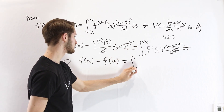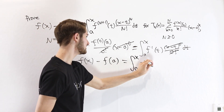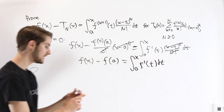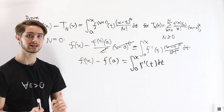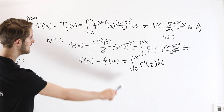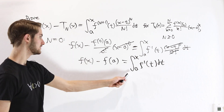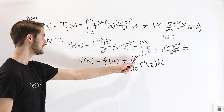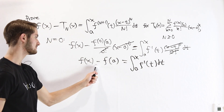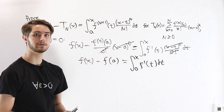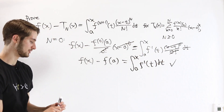So we're left with f(x) minus f(a) on the left, and the integral from a to x of f'(t) dt on the right. This equation should look very familiar — it is one of the forms of the Fundamental Theorem of Calculus: the integral from a to x of f'(t) dt equals f(x) minus f(a). Because of that, we know this equation is definitely true.